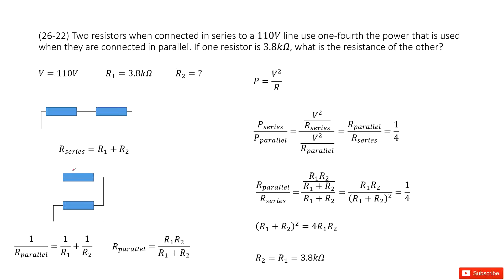For the parallel connection, the equivalent resistance is given by 1 over R_parallel equals 1 over R1 plus 1 over R2. You can solve this equation to get the function for R_parallel. Now we are prepared.